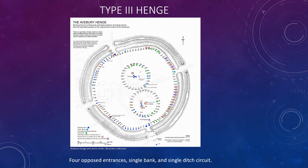Finally we come on to the Type 3 henge and I've used Avebury as the example here. These are henges which have four opposed entrances, a single bank and also a single ditch.